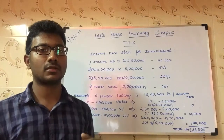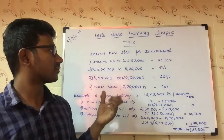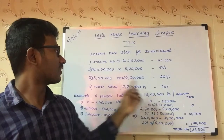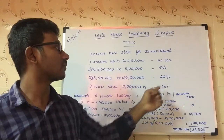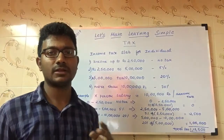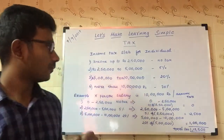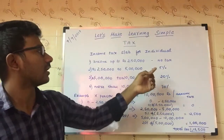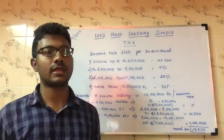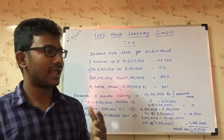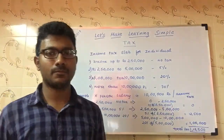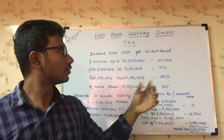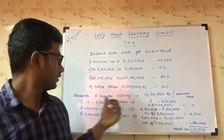If a person is earning 10,50,000, most people might calculate the tax amount wrongly. Because 10,50,000 falls in the 5,50,000 to 10,50,000 category, many would think 20% of 10,50,000 is the tax — but that's not the actual case. Many of my friends say they are falling in a certain category and therefore paying that percentage on their full salary. That's not the correct interpretation.